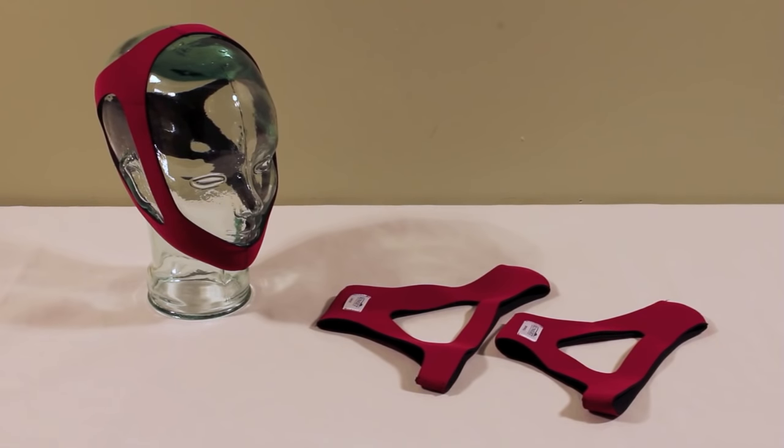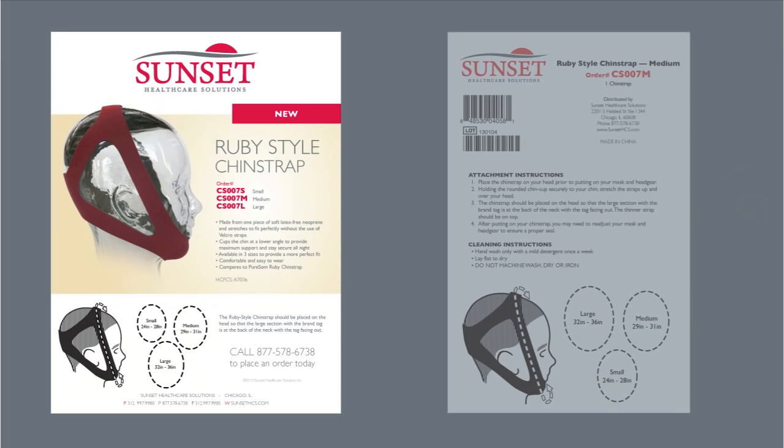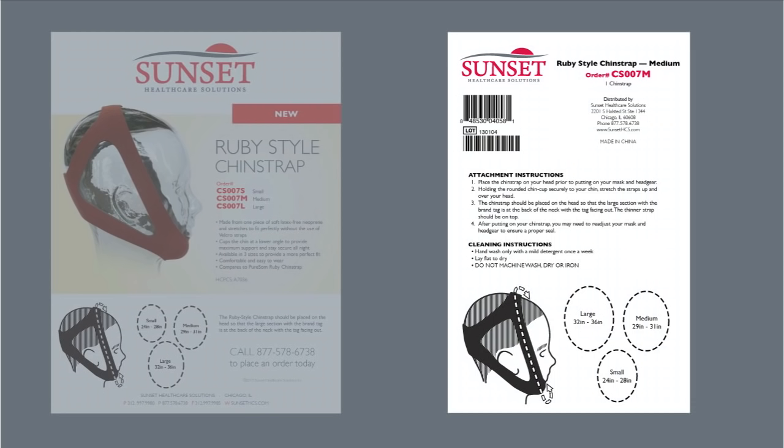Sizing measurements are also listed on the Sunset website in the ruby style chin strap product information flyer as well as in the product instructions that come with the chin strap.